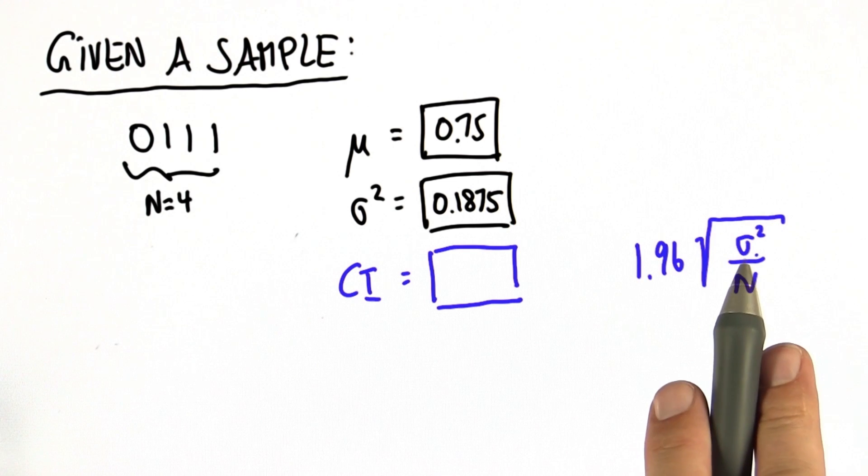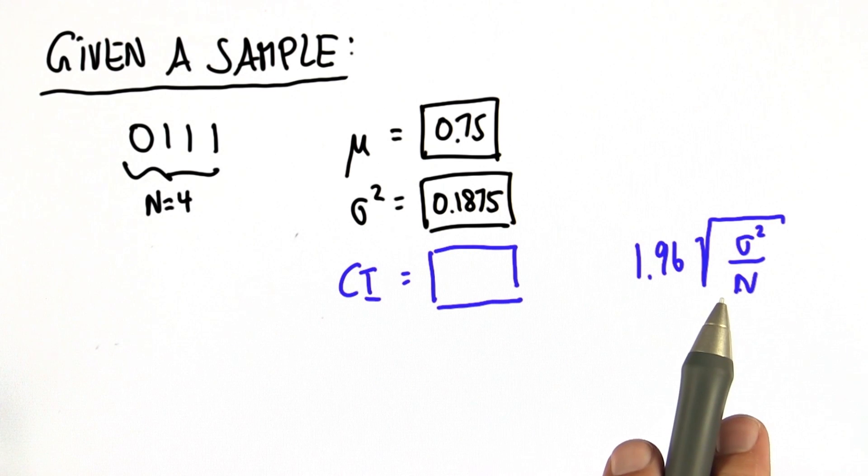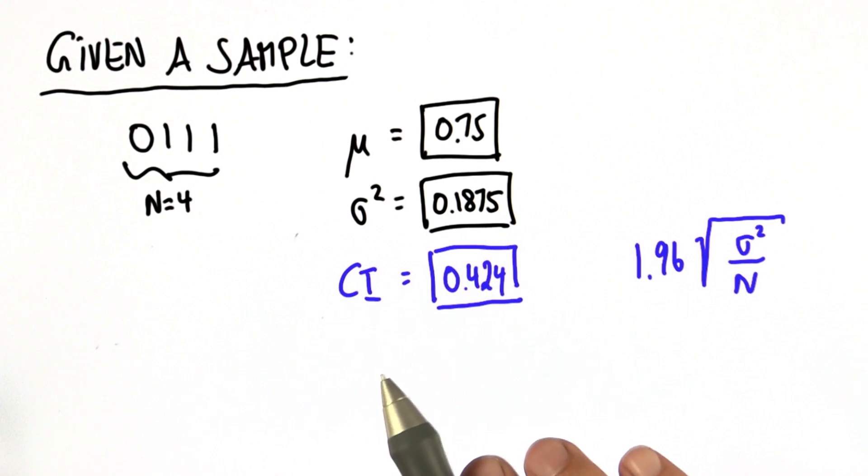We've replaced the analytic variance by the empirical variance over here. But otherwise, it's the same as before. So I just calculated this, and here's what I get.